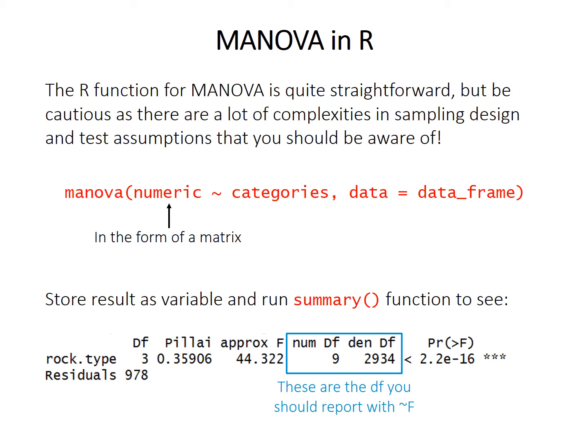Store the MANOVA result as a variable and then run the summary function to see the details. The output is quite brief but gives you everything you need. Note there are two sets of degrees of freedom: the DF column on the left (3 and 978 in this example), but the ones you want for the approximate F are the numerator and denominator DFs in the summary box — 9 and 2934 in this example. The summary function is also where you can choose a different test statistic, such as Wilkes' lambda or Hotelling-Lawley, instead of the default Pillai's trace.